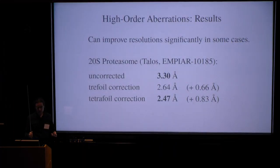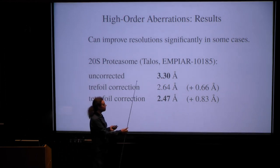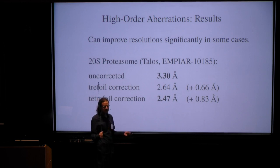This actually does make a difference in some cases when it really is a problem. We found this is the most extreme dataset that I've found, this proteasome, where we start with 3.3 angstrom, and then by correcting both the symmetrical and the anti-symmetrical aberrations, we can get all the way to 2.5.